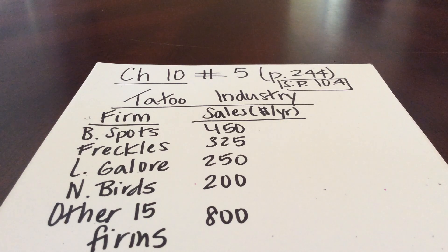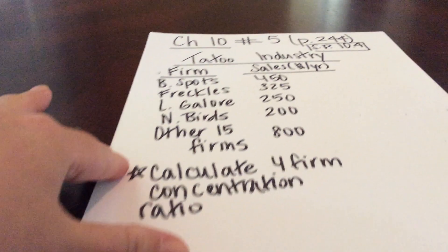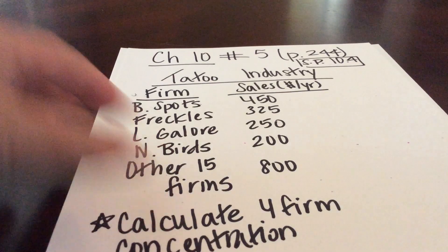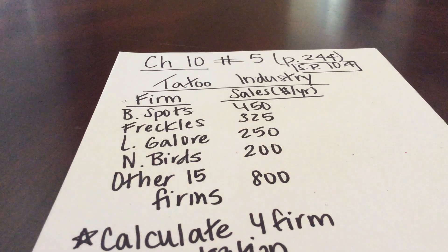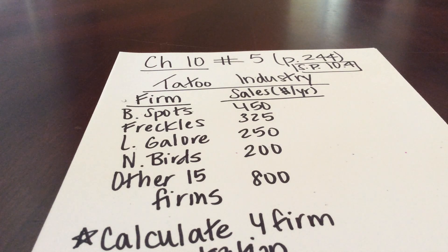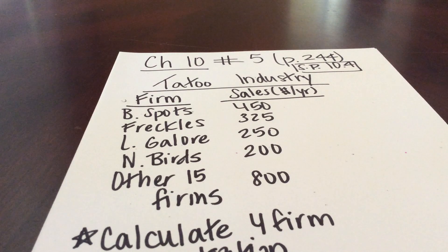In this question, we are going to calculate the four-firm concentration ratio. We're trying to see how competitive this particular market is — here we're looking at the tattoo market. We're going to compare the annual sales of the top four firms in the tattoo industry to the industry total.